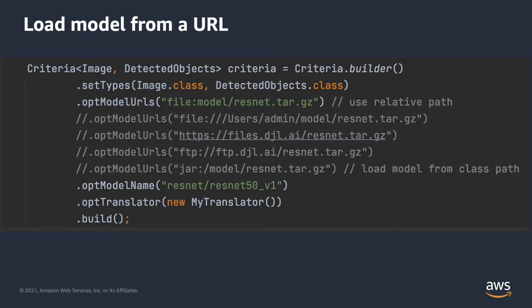After downloading the model, DJL will look for the model with the same name as the archive file. For example, if your archive file is named resnet.zip, DJL will assume there is a model named resnet inside the archive. If the model has a different name or is in a nested folder, you will need to specify the model name. When loading a model from a URL, you generally need to provide a translator in the criteria, unless you have already bundled the translator factory inside the archive file.